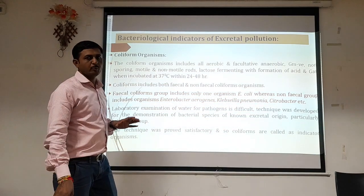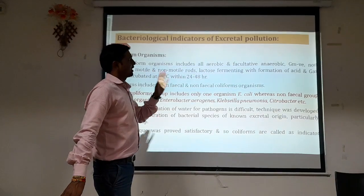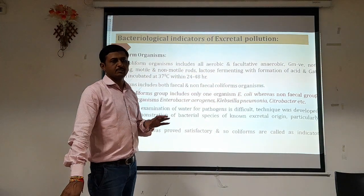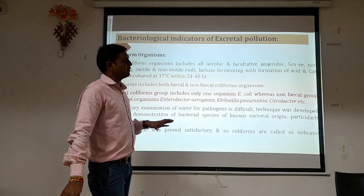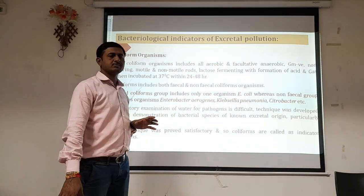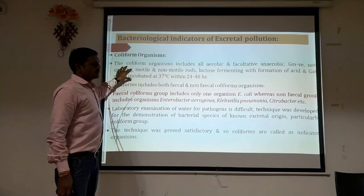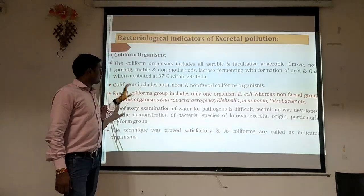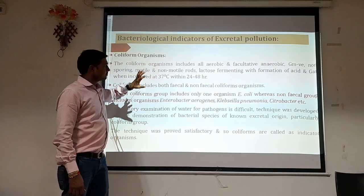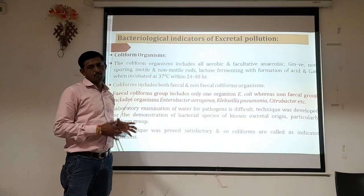Coliform organisms are aerobic organisms, meaning they require oxygen for their growth. They are also facultatively anaerobic, meaning they can survive in the presence or absence of oxygen. They are gram-negative, meaning after gram staining they appear pink under the microscope. They are non-spore forming. These are the basic characteristics of the coliform group of organisms.